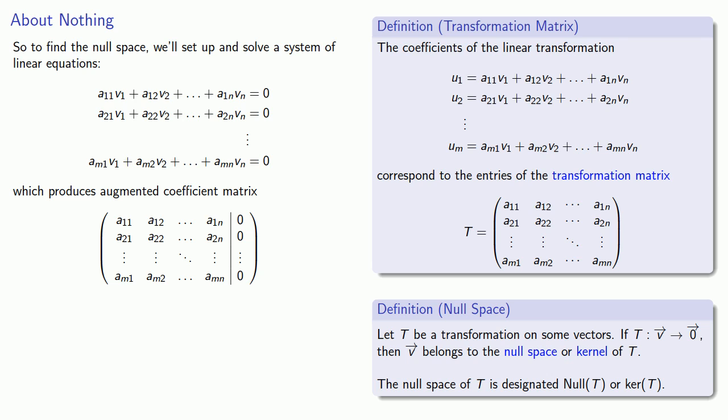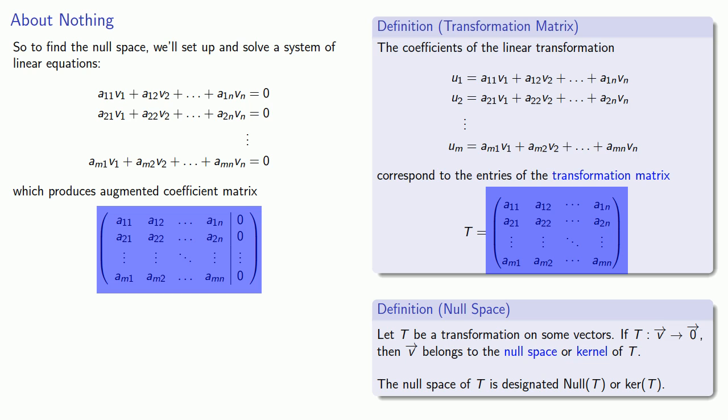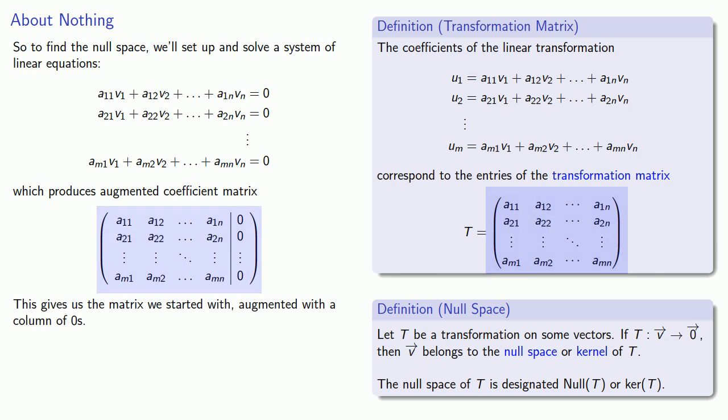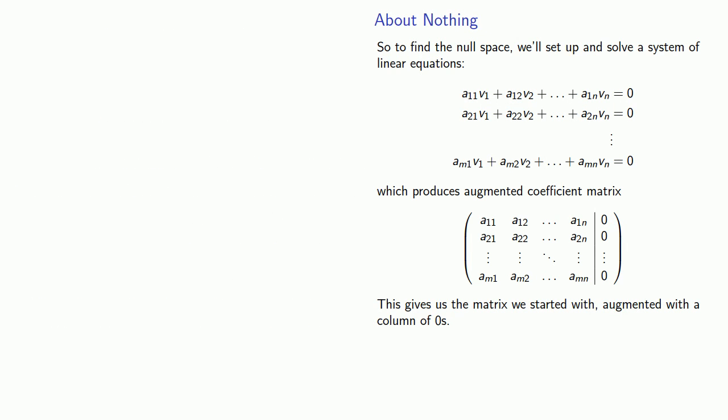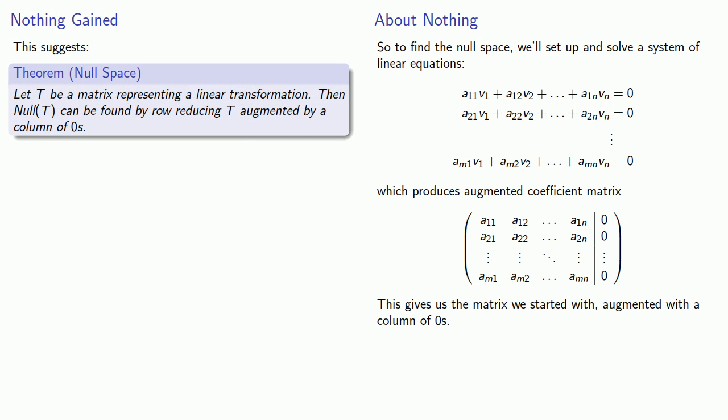A useful habit to get into as a mathematician is to ask yourself constantly, where have I seen this before? In this case, it's worth noting that our augmented coefficient matrix is the same as the matrix representing our linear transformation augmented with a column of zeros. This suggests the following theorem. Suppose T is a matrix representing a linear transformation. Then Null(T), the null space of T, can be found by row reducing T augmented by a column of zeros.